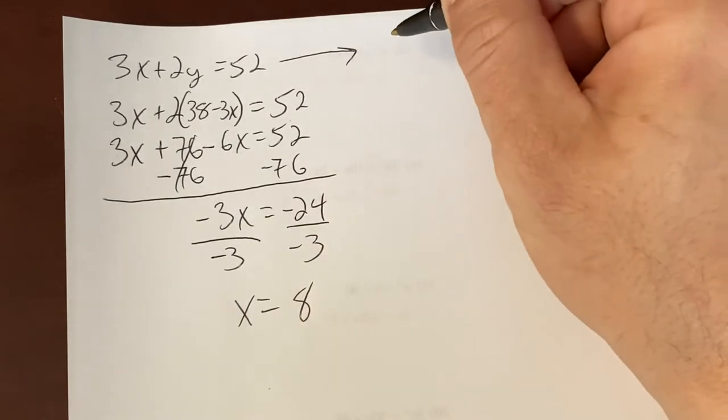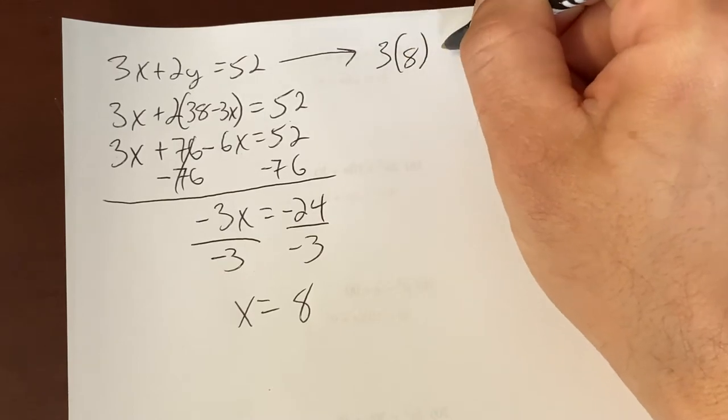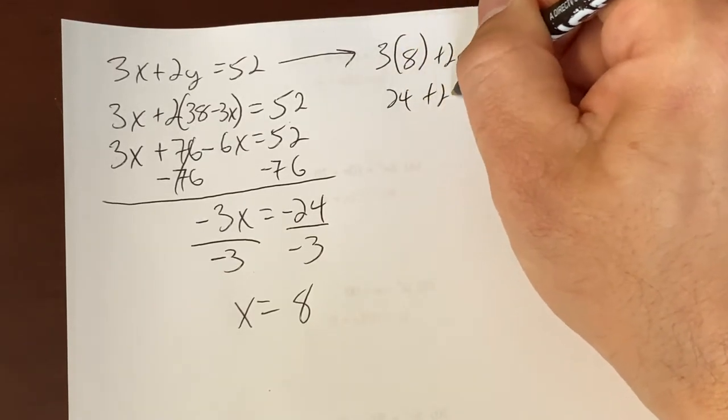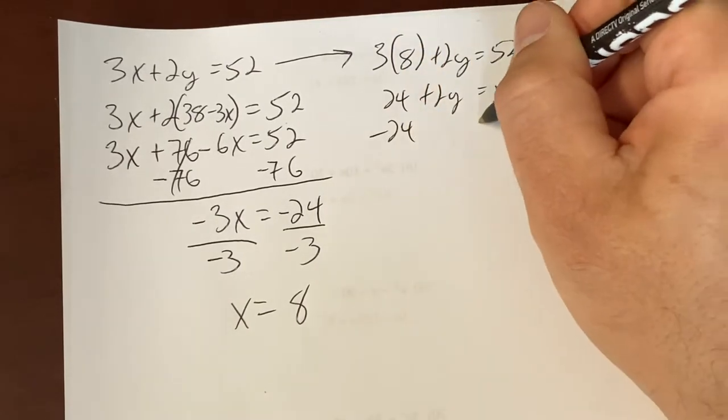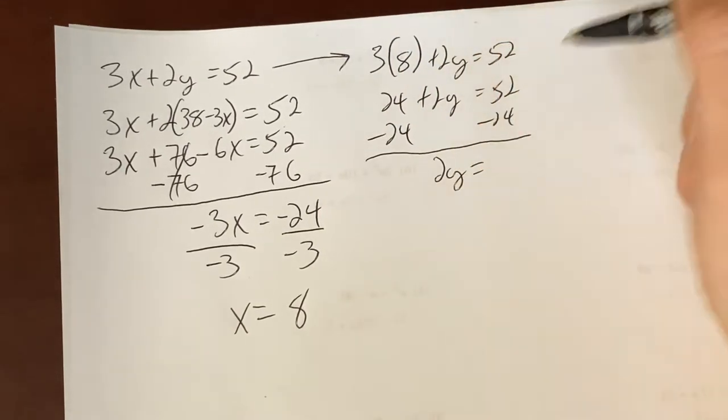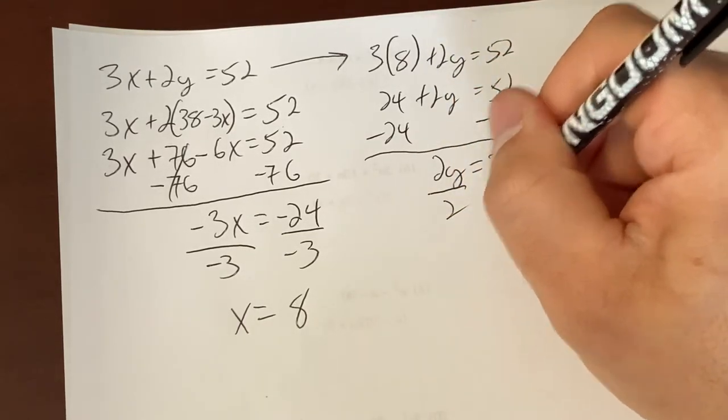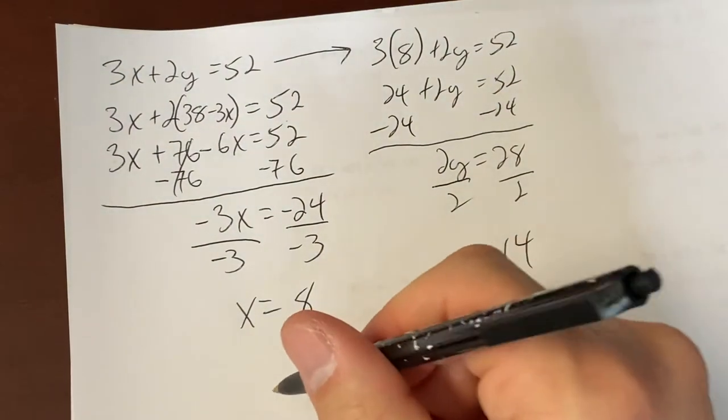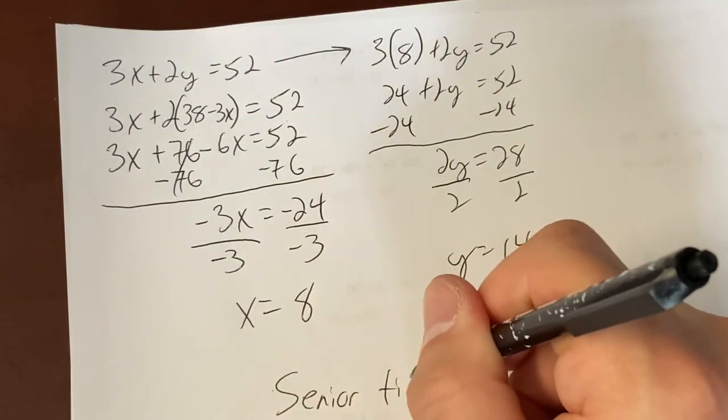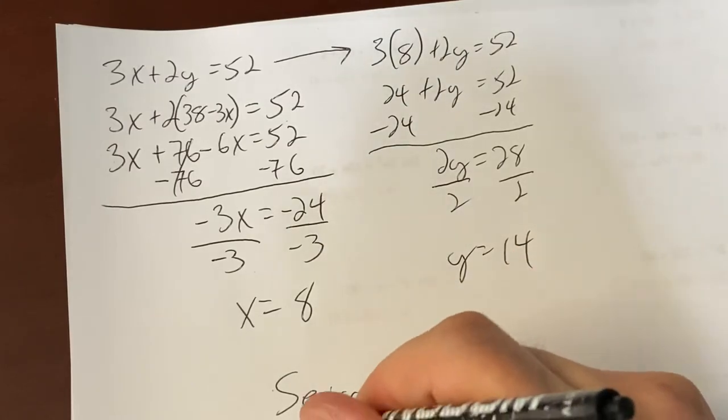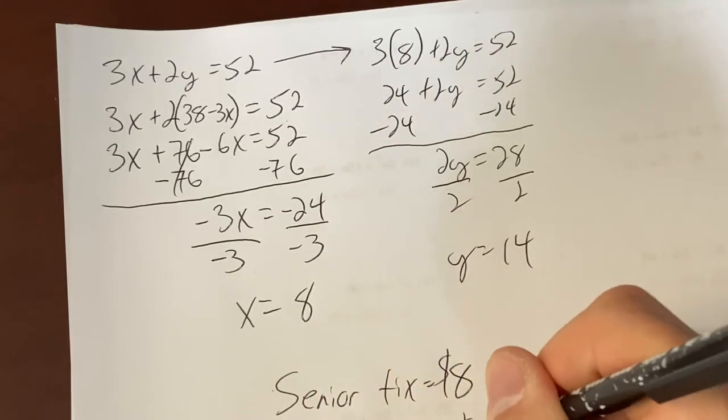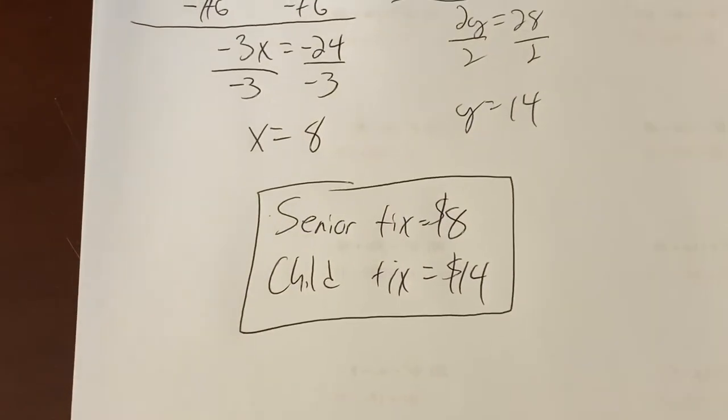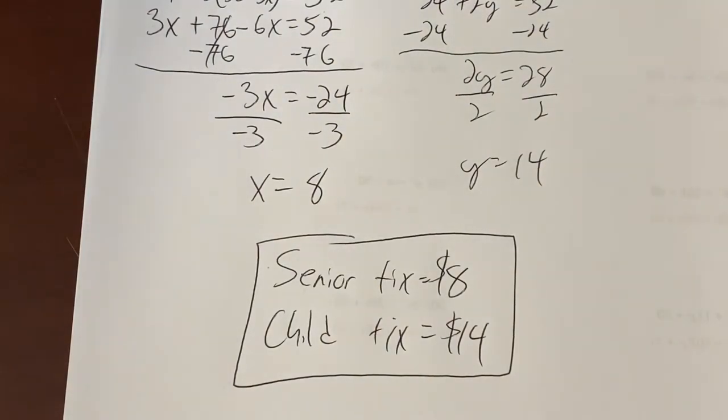Now let's take this guy right here and plug in 8. 3 times the 8 bucks plus 2y is going to equal 52. 24 plus 2y equals 52. Subtract 24. 2y equals, I guess that would be 28. Divide by 2. And y equals 14 bucks. So, senior ticket, 8 bucks. Child ticket. Look at my sloppy handwriting. 14 bucks. Oh, ha. I was doing that all out of screen. Whoop. There you go. Final answer. Alrighty.